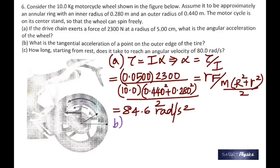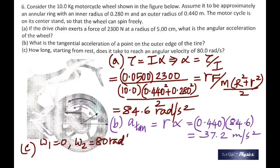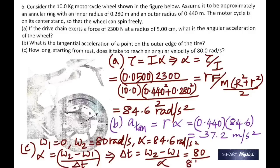For part b, tangential acceleration: a = rα. Multiply alpha by the outer radius (0.440 m) to get 37.2 m/s². For part c, how long starting from rest does it take to reach 80 rad/s? ω₁ = 0, ω₂ = 80, alpha = 84.6. Using α = (ω₂ − ω₁)/t, rearranging gives t = 0.946 seconds.